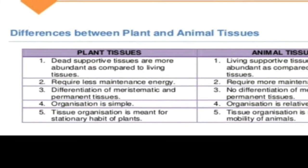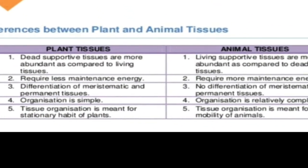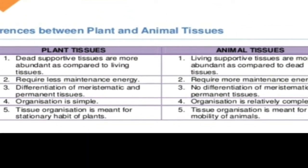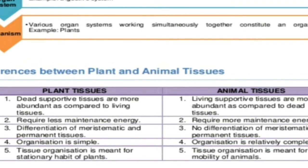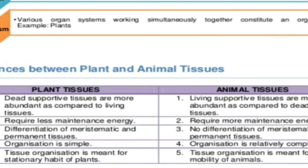Now let us discuss the main topics of this chapter: plant tissues and animal tissues. We will be discussing the basic differences between plant tissues and animal tissues in this chapter.